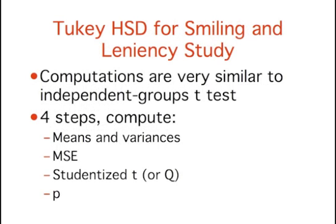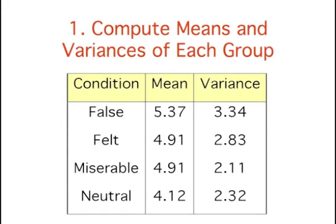Let's get back to our example, the smiling and leniency study, to see how we compute the Tukey HSD test. You might notice that the computations are very similar to those of an independent groups t-test. We'll go through each of the four steps to compute Tukey HSD. We'll compute the means and variances, the mean square error, the studentized t, which is also known as Q, and then the p-value. First, we compute the means and variances of each group. They are shown in the table here.